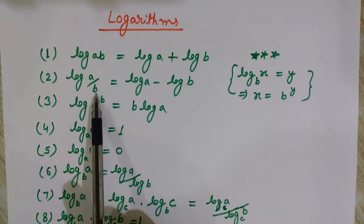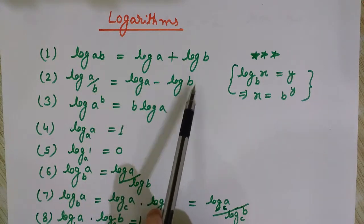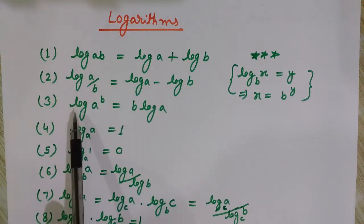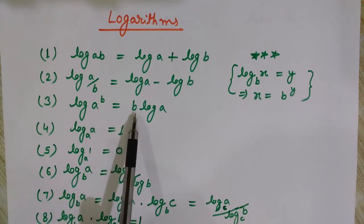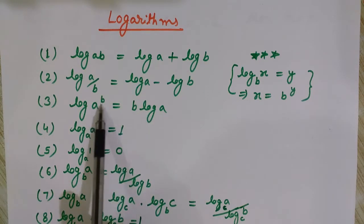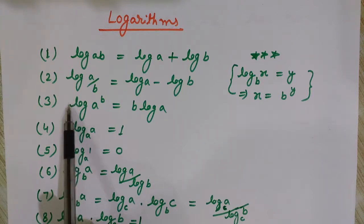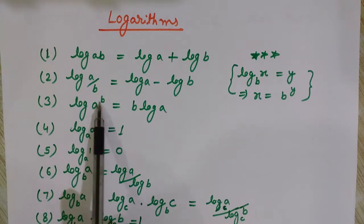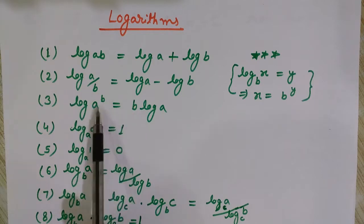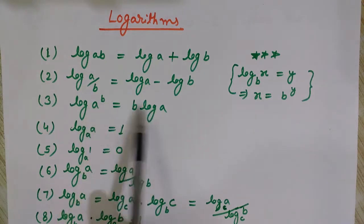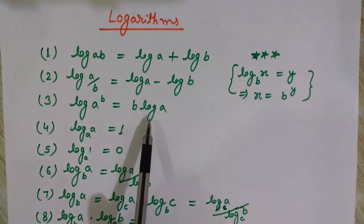In the same way, log of a by b is equals to log of a minus log of b. Log of a to the power b is equals to b log a — it means this b comes before log. You can see this b comes here, so it is b log a. We will use these things and you will have a better concept of how we use them in solving problems.